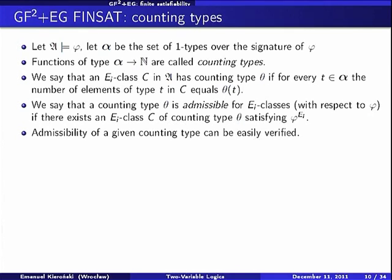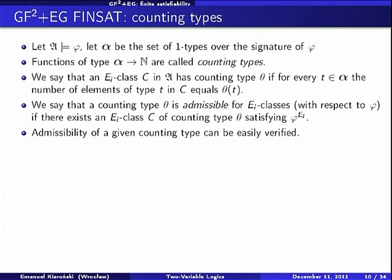In the remaining part of the talk, I will use the notion of a counting type. The purpose of counting types is to count the number of realizations of one-types in equivalence classes. Formally, a counting type is a function from the set of one-types over the signature of the formula phi to the natural numbers. We think of it this way: if we have an E_i-equivalence class C in model A, its counting type says, for a given one-type, how many elements of that type we have in this class.